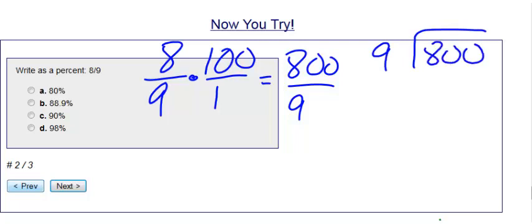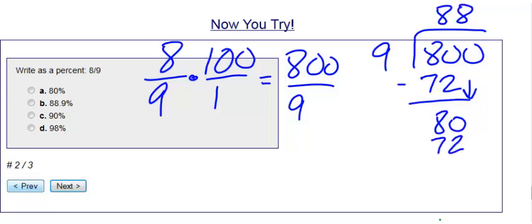9 goes into 80 eight times, 8 times 9 is 72. I have 8 left over, I have nothing left to bring down.